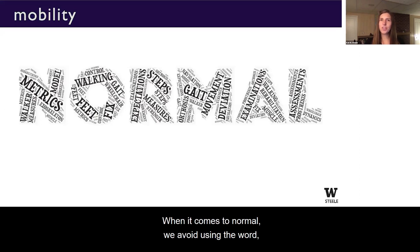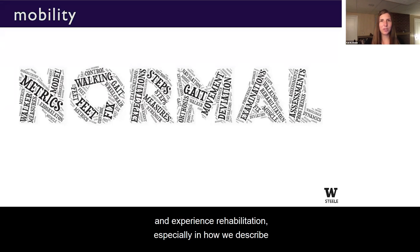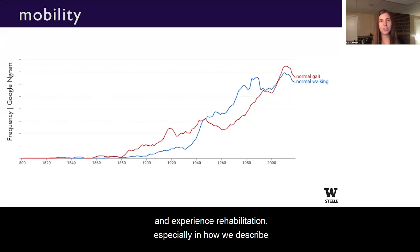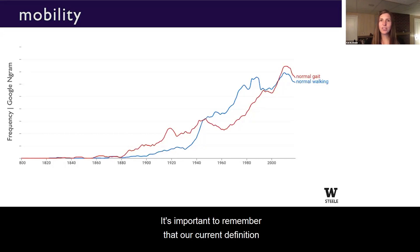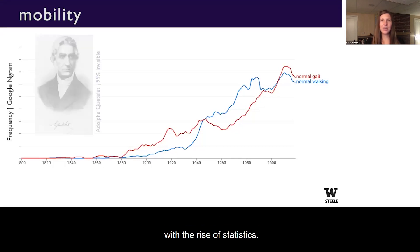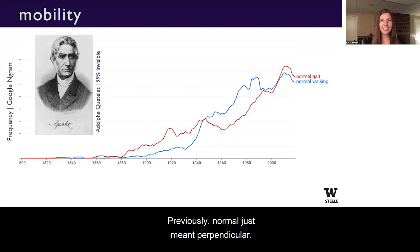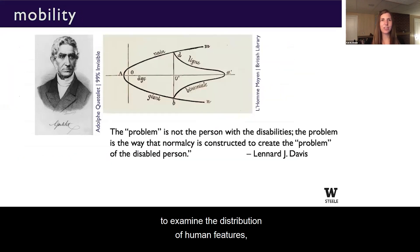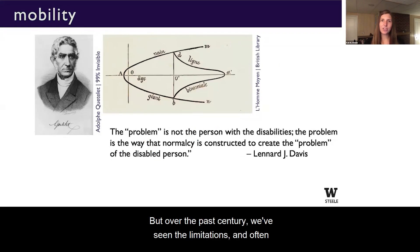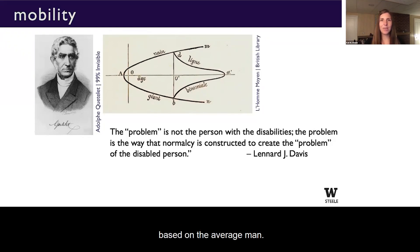When it comes to normal, we avoid using the word or come up with proxies, but it still underlies how we design, evaluate, and experience rehabilitation, especially how we describe and evaluate mobility. It's important to remember that our current definition of normal did not even appear until the mid-1800s with the rise of statistics — previously, normal just meant perpendicular. Adolph Quetelet expanded statistical methods to examine the distribution of human features, describing the term 'the average man.' But over the past century, we've seen the limitations and often deadly consequences of designing based on the average man.